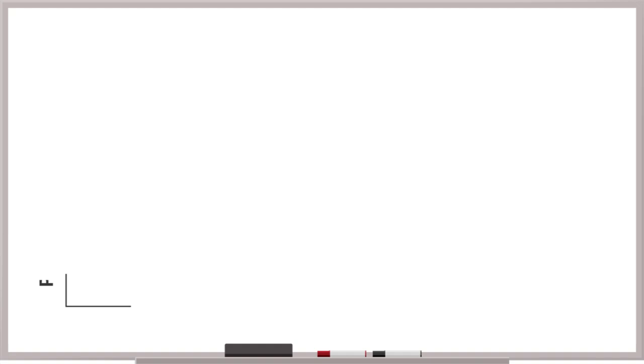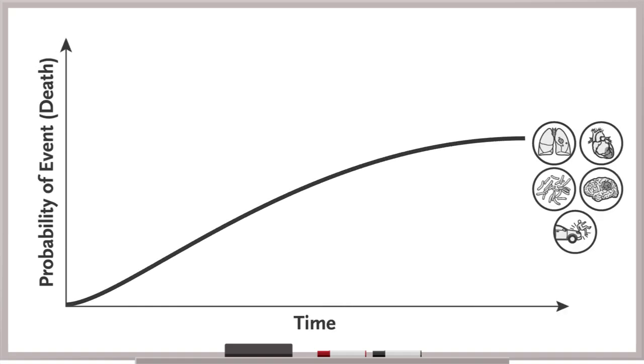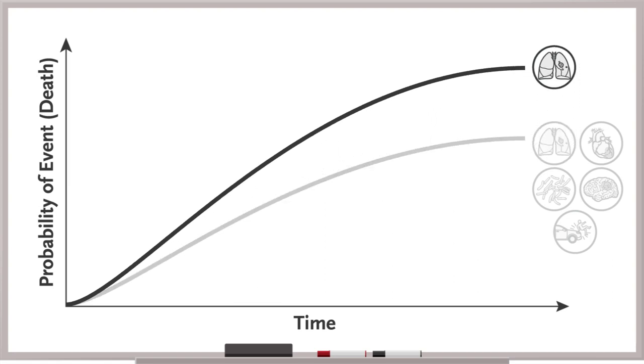You can imagine that in these examples, accounting for competing events is crucial. In fact, not accounting for competing risks typically leads to an overestimation of the probability of the outcome.